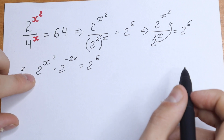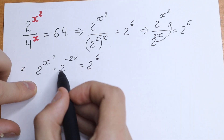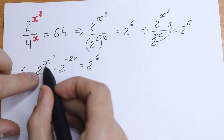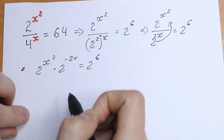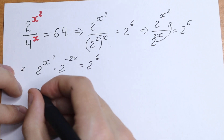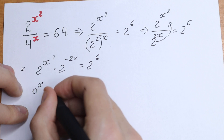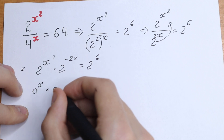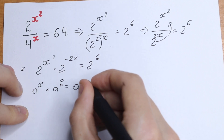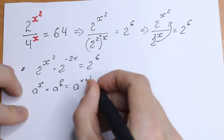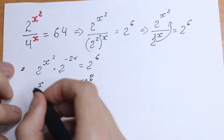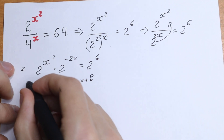What we're going to do next? We have the same base, and when you have multiplication with the same base, you just add your exponents. This is the rule: if you have a to the power x times a to the power b, you can write it as a to the power x plus b. Just add your exponents.